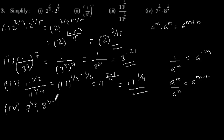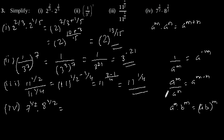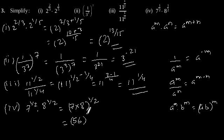Fourth part: 7 to the power 1 by 2 into 8 to the power 1 by 2. Here we use the formula a to the power m into b to the power m is equal to a into b whole to the power m. So this will become 7 into 8 to the power 1 by 2, which gives us 56 to the power 1 by 2.